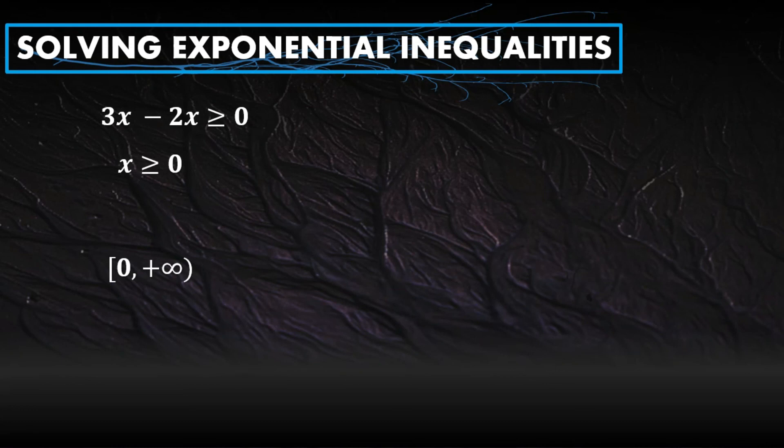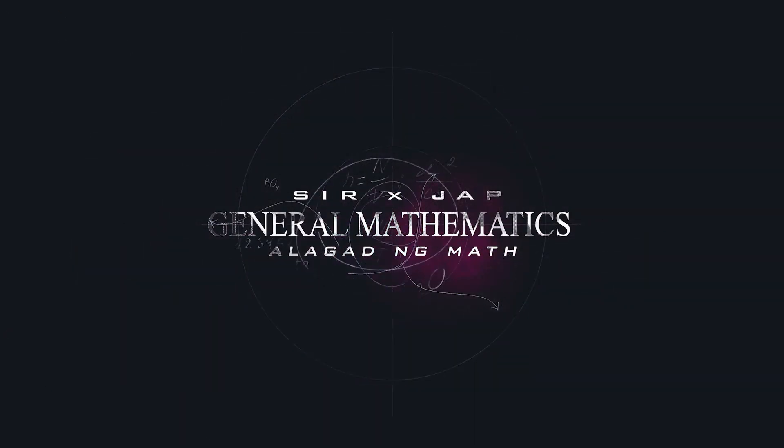This could be written in interval notation as 0 to positive infinity. If we look at the 0, we have a bracket here because there's an equal sign at the bottom of greater than. And since it's greater than, it should be positive infinity. What if the given becomes less than? You can make it negative infinity, but in reverse order. The infinity comes first before the number. Okay, so that's it. That's how I solve exponential inequalities.